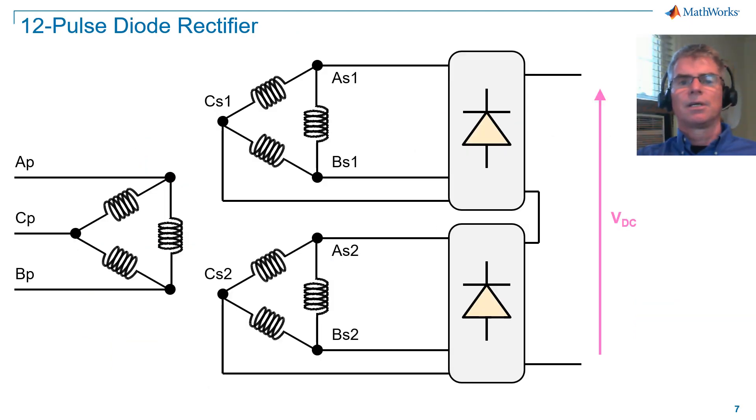We'll now consider an architecture for a 12-pulse device. That is, a rectifier that has two six-pulse devices connected in parallel. A 12-pulse device is supplied by a three-winding transformer that has two secondary windings. For additional information on three-phase transformers, please refer to part three in this tutorial series.